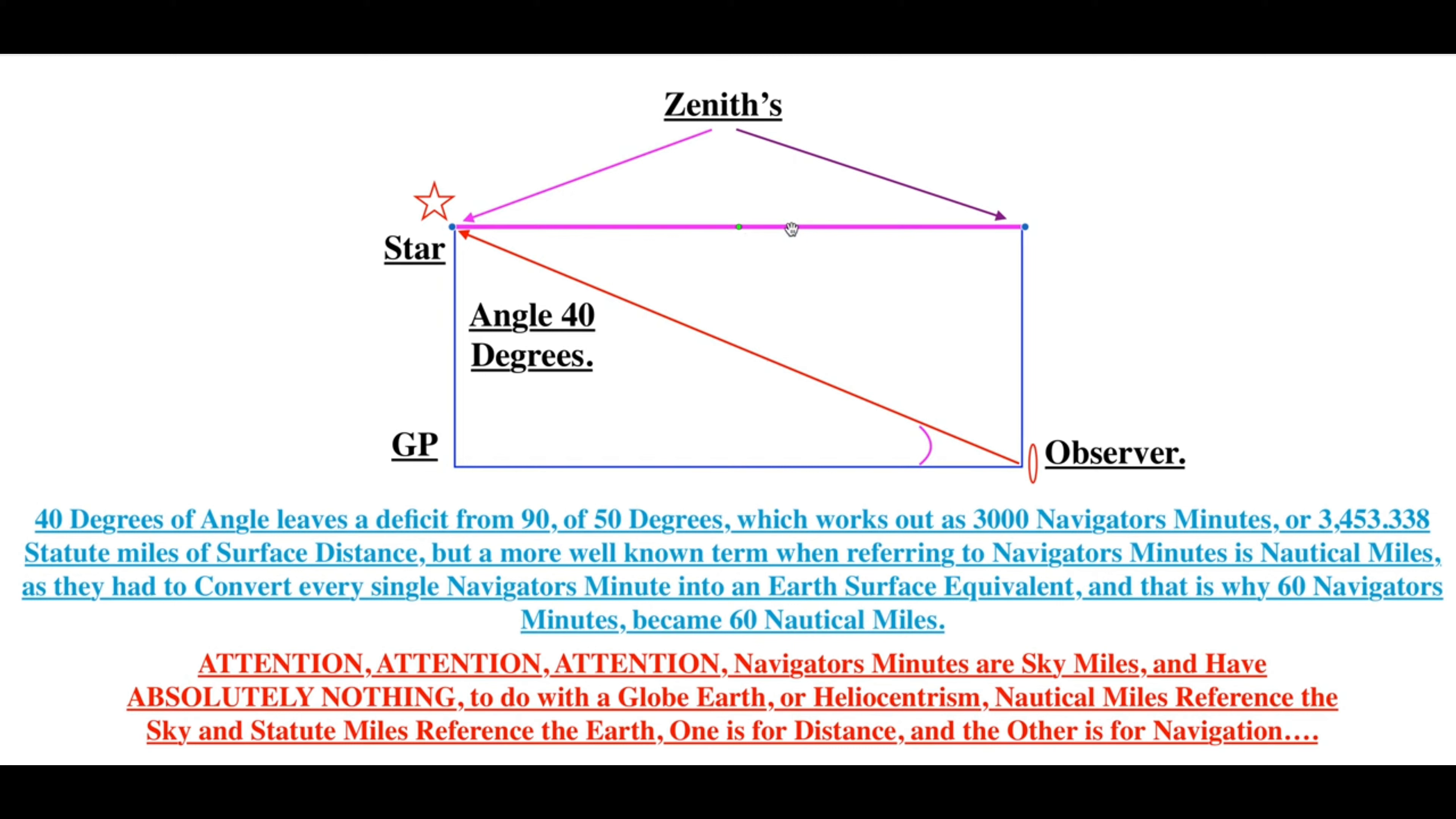So what they had to do is take all these navigator's minutes, once they have determined that distance, which is a co-altitude distance, they then take those 3000 navigator's minutes and bring them down to the surface of the earth and call them nautical miles.